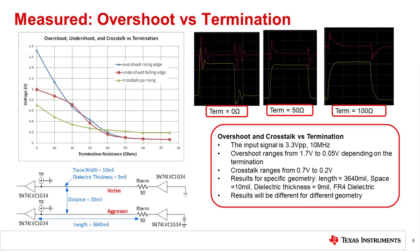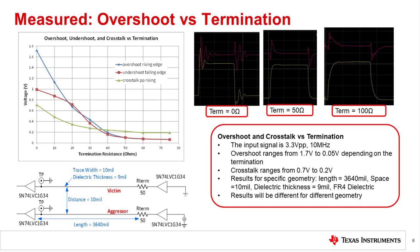This slide shows measured results for a termination line where the termination resistance is adjusted across a wide range. A 74LVC1G38 gate is used as the transmitter and receiver. One line, called the aggressor, is driven with a 3.3 volt, 10 megahertz square wave. The other line, called the victim, is driven with a logic low. The aggressor will cause crosstalk on the victim. For the experiment, we will look at overshoot and crosstalk between the two traces. Theoretically, the overshoot will be zero when the termination resistance plus the driver impedance is equal to the trace impedance.